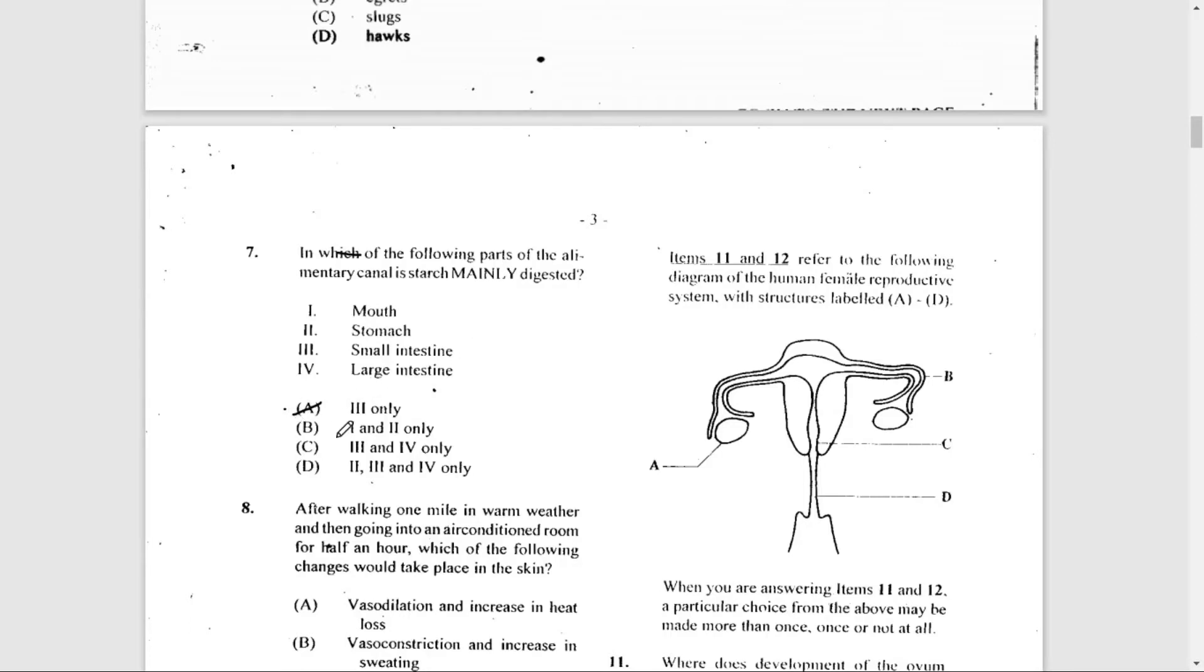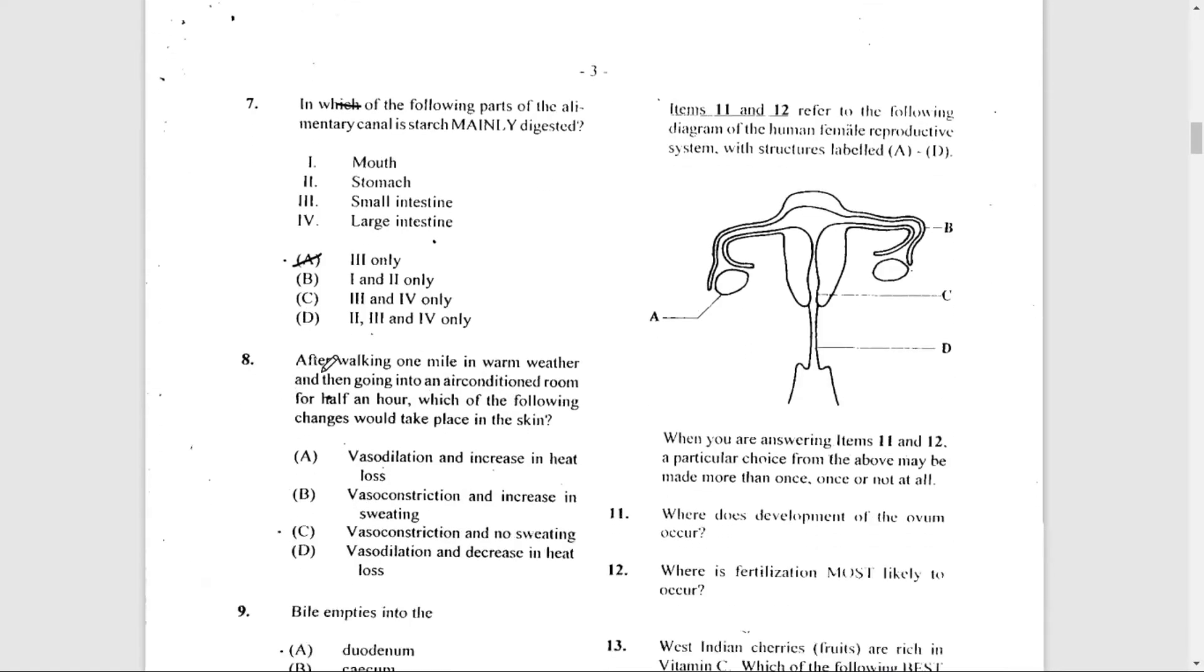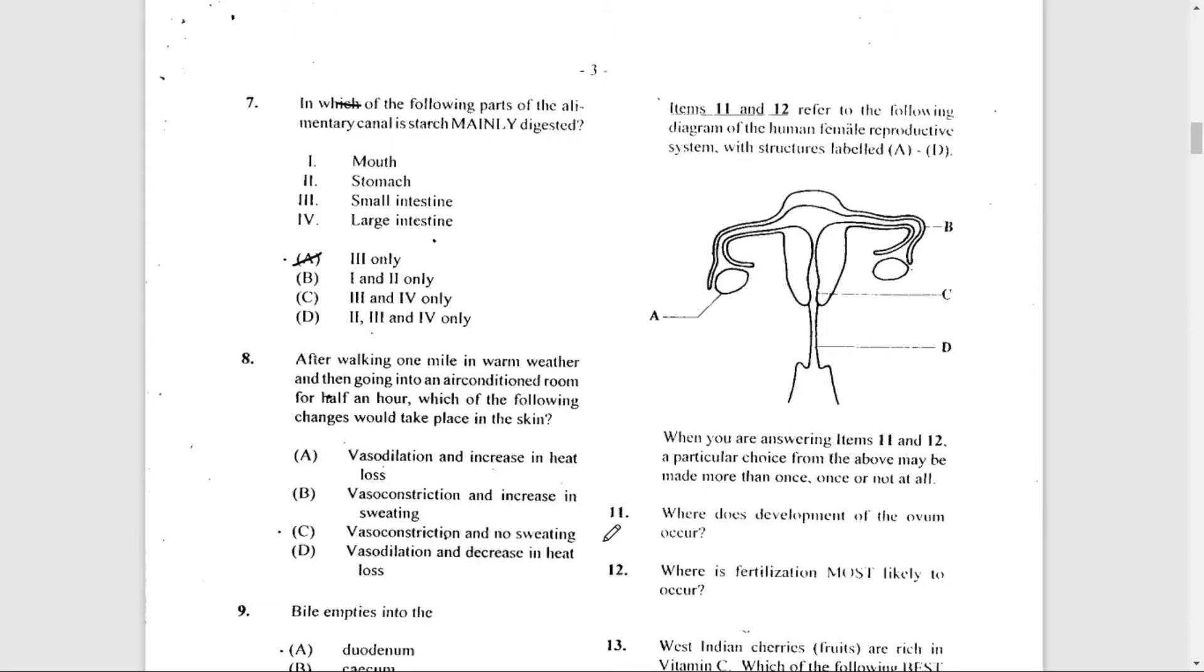Number 8: After walking one mile in warm weather and then going into an air-conditioned room for half an hour, which of the following changes would take place in the skin? Your blood vessels would become narrower—that is vasoconstriction—and sweating would decrease. So the answer here is C: vasoconstriction and no sweating.